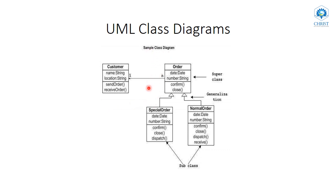This is a sample class diagram representing customer and order placement. Customer is one class and Order is another class. Special Order and Normal Order are not classes — they are actually subclasses, as we can see from the generalization arrow. This kind of arrow mark is used for representing a generalization relation, which is used to represent inheritance. So Special Order and Normal Order are subclasses of the class Order, meaning Order is the parent class and these two are subclasses.